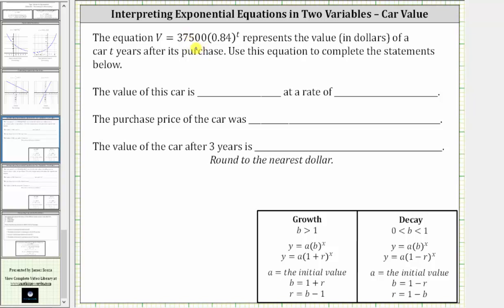The equation V equals 37,500 times 0.84 raised to the power of t represents the value in dollars of a car t years after its purchase. Use this equation to complete the statements below.